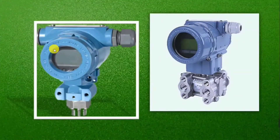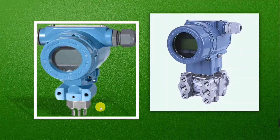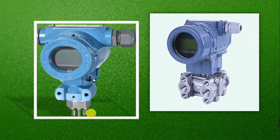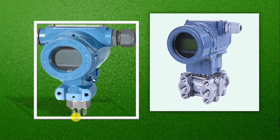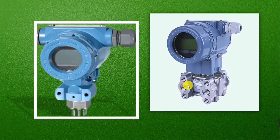The next comparison is process connection. There is only one process connection in a pressure transmitter — it is mounted directly on a process line or tank. Whereas flow transmitter has two process connections.